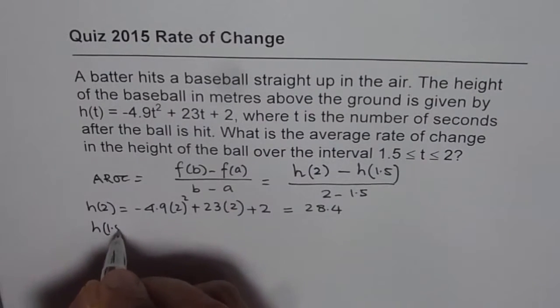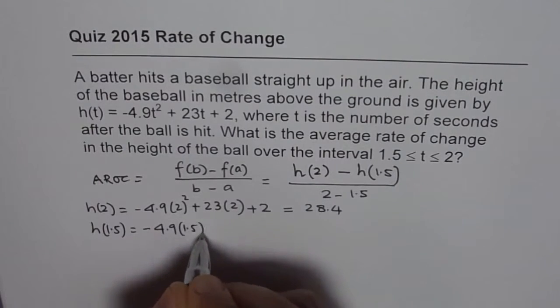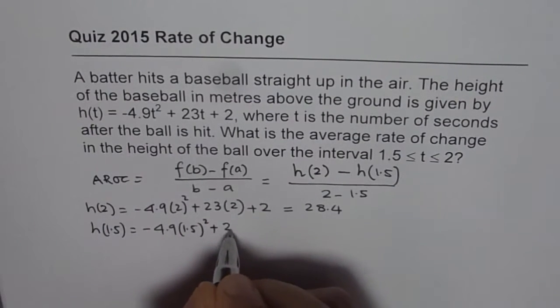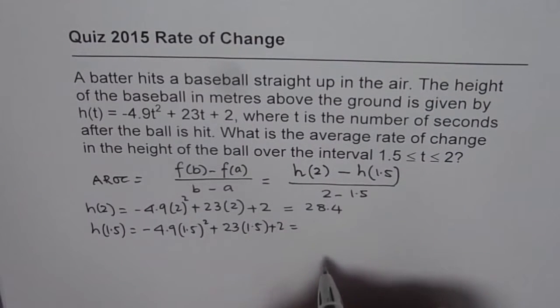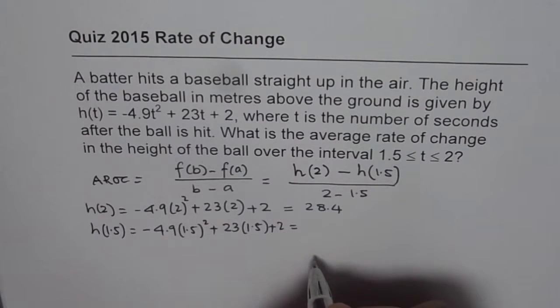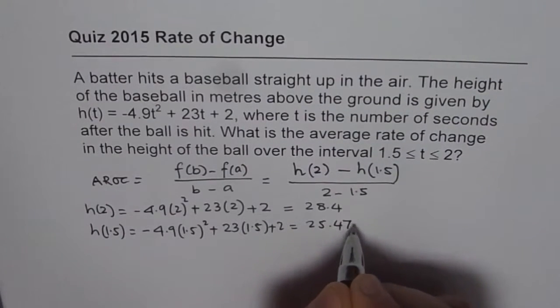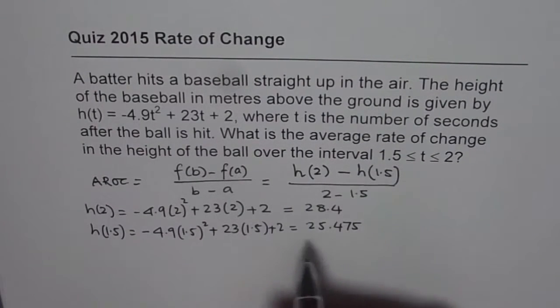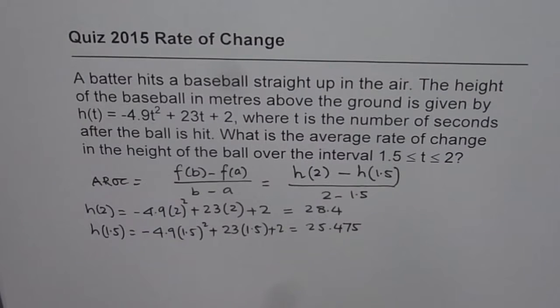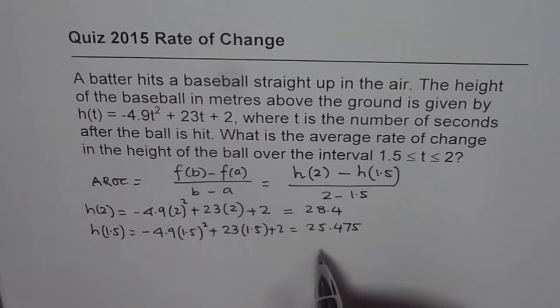h(1.5) will be -4.9(1.5)² + 23(1.5) + 2. When you calculate, in this case you get 25.475. I am not using a calculator; I am just picking up the values. The idea is to tell you how to find the answer.